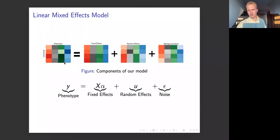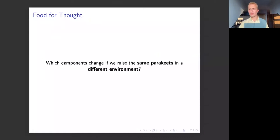Consider the components of this model in a hypothetical situation: which would change if we raised the exact same two parakeets but switched the countries in which they were raised — same genomic sequences, but the countries changed? How would it affect our heat maps?